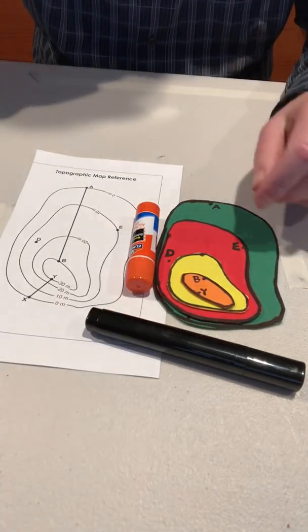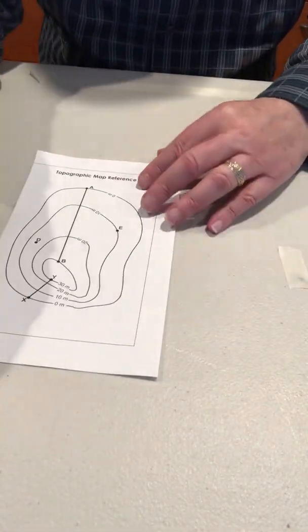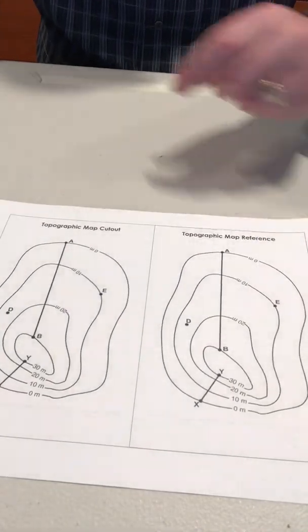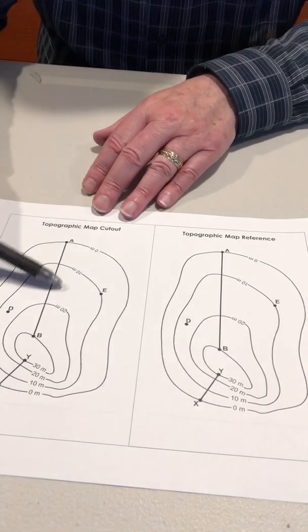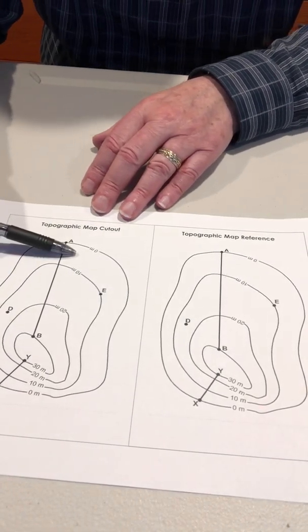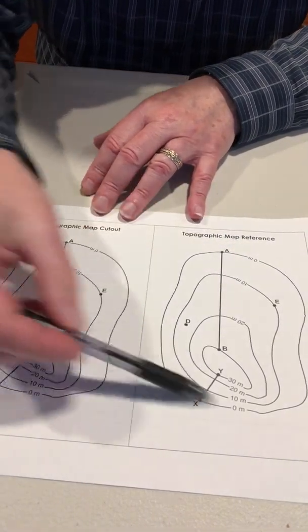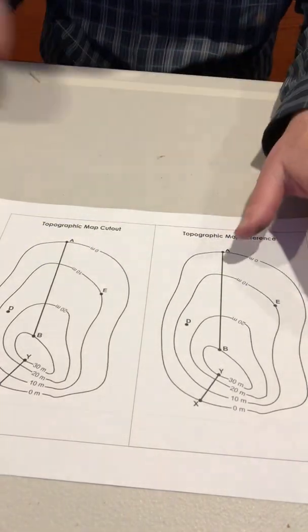You'll be copying a page with topographic maps for each student, and that page has two maps on it. One is a topographic map cutout that the students will use when they construct their models, and the other one, it's identical, the only difference is the title, is that that's the reference page.